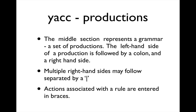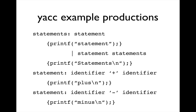The productions in the middle section represent the context-free grammar of our language. The left-hand side of a production, also known as a non-terminal, is separated by a colon and followed by a right-hand side. If we have multiple right-hand sides following a non-terminal, we add those using the vertical pipe. For every production specified, we can have actions associated with it.